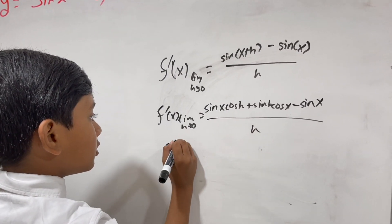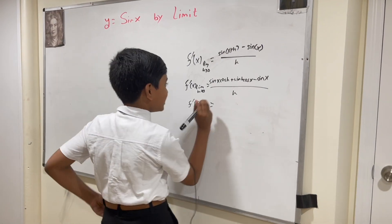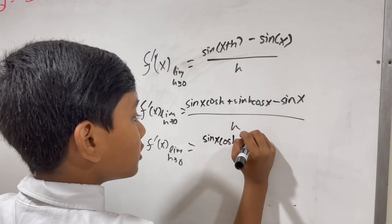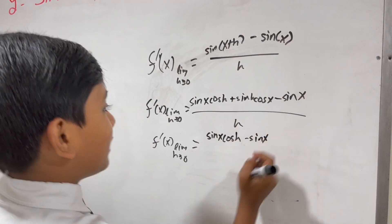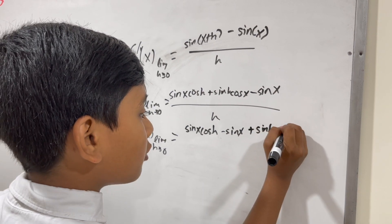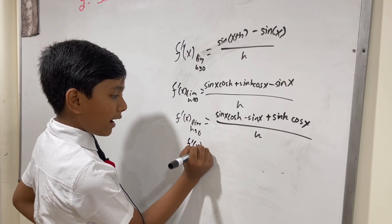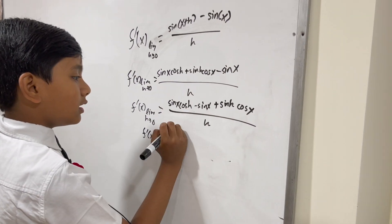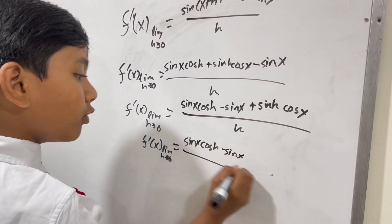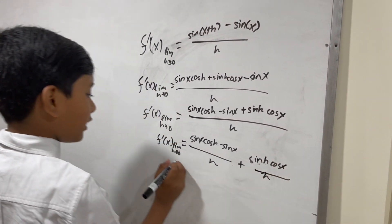So now we're going to factor out sine of x. So you have sine of x times cosine h minus sine of x over h, plus sine of h cosine x over h.